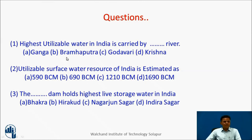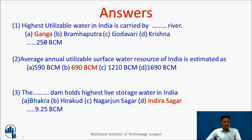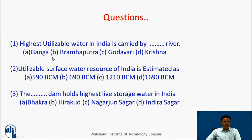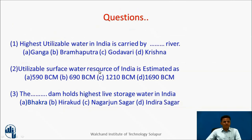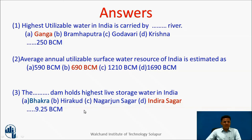Let us have some questions. Question 1: Which river carries the highest utilizable water in India? Answer: Ganga, about 250 billion cubic meters. Question 2: Utilizable surface water resource of India is estimated as? Answer: 690 billion cubic meters. Question 3: Which dam holds the highest live storage water in India? Answer: Indira Sagar, 9.75 billion cubic meters.